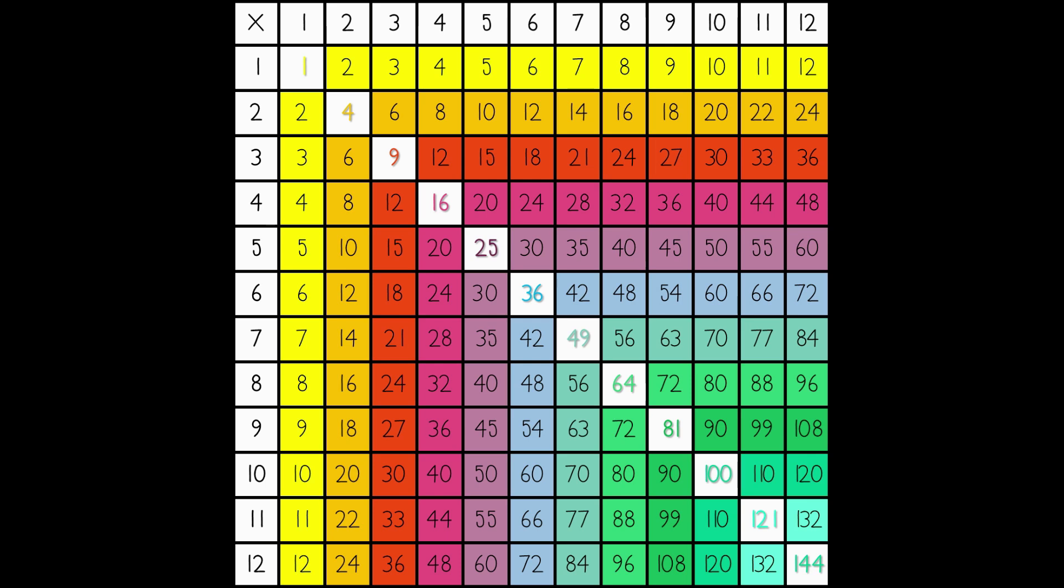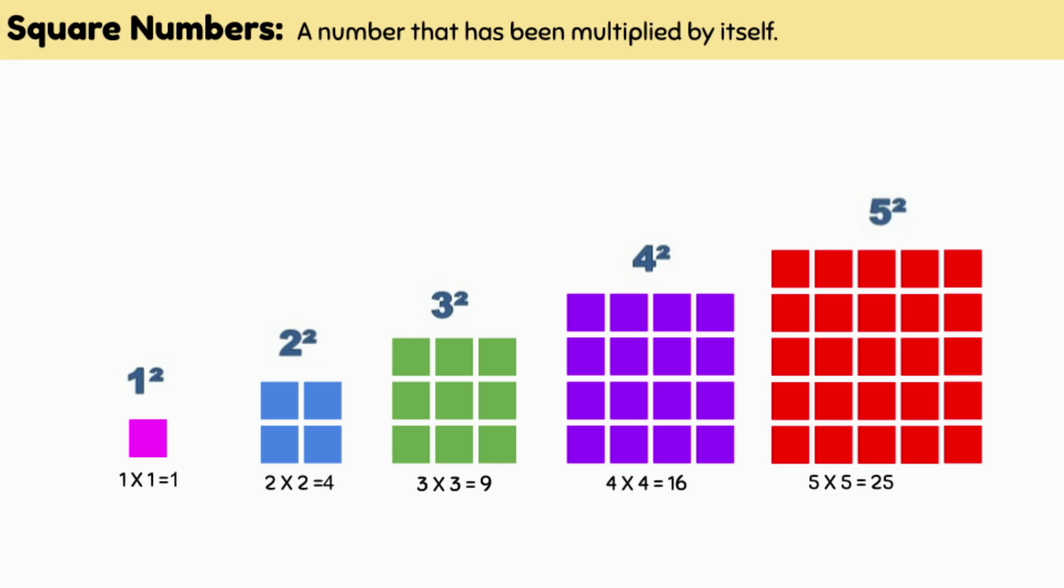The reason we call these numbers square numbers is because when you put them into an array, they make a perfect square, as you can see in the picture.